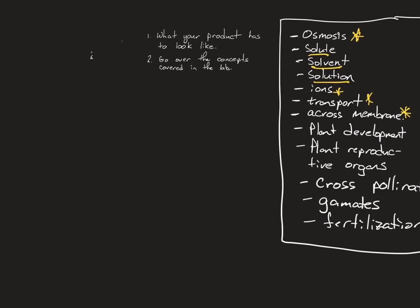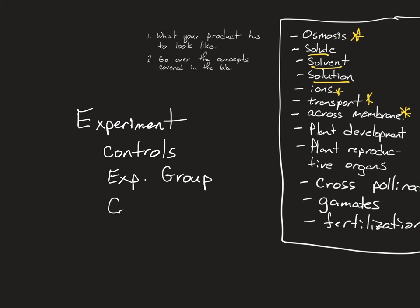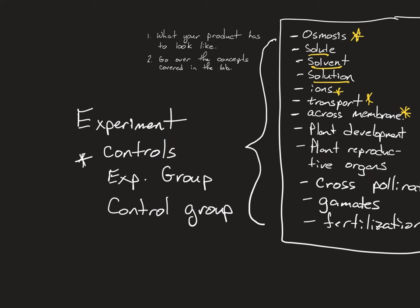Rather than spending a week lecturing on all of this, I thought we would start with the lab and let you experience and experiment with a fairly simple concept of control groups. These are the main ideas of the lab: controls, experimental group, control group. And also to experience all that and take a look at it without really understanding the vocabulary.